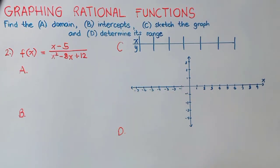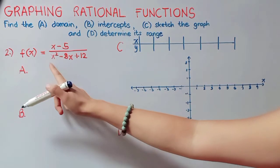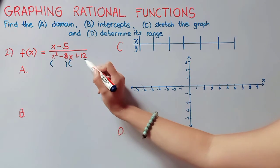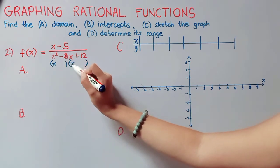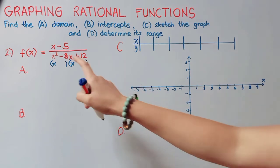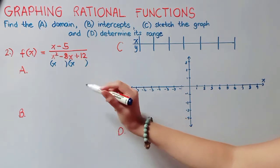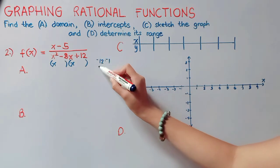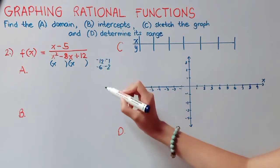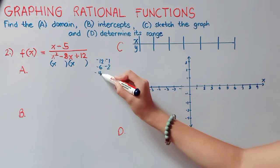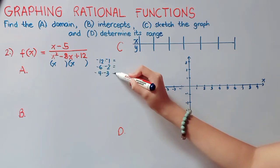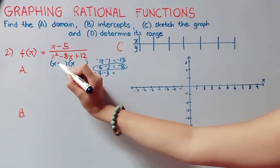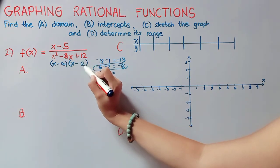We are now on number 2: f of x is equal to x minus 5 all over x squared minus 8x plus 12. Let us first factor the denominator. x squared factors as x times x, and the factors of 12 that give us the negative middle term negative 8 are negative 6 and negative 2, since negative 6 plus negative 2 equals negative 8. Therefore our factors are (x minus 6) and (x minus 2).